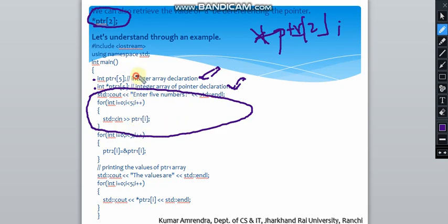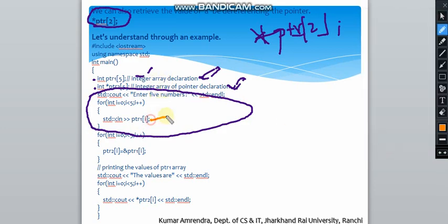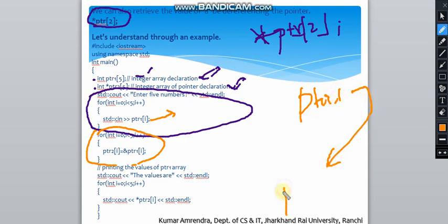The first array is ptr1. We are storing those five values in ptr1, and in the second loop, we are starting from 0 to 5, which means for five iterations, and we are storing the values of ptr1. What we are storing is the addresses from pointer 1 array to pointer 2.